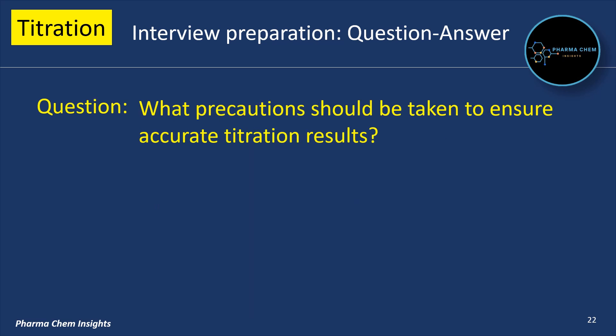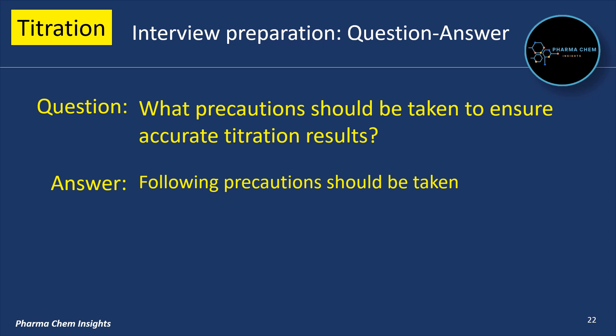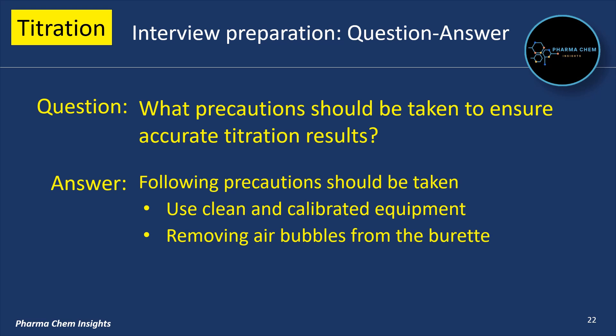Next question: what precautions should be taken to ensure accurate titration results? The following precautions should be taken: first, use clean and calibrated equipment; second, remove air bubbles from the burette; third, choose an appropriate indicator; fourth, perform the titration slowly and carefully to avoid overshooting the endpoint.